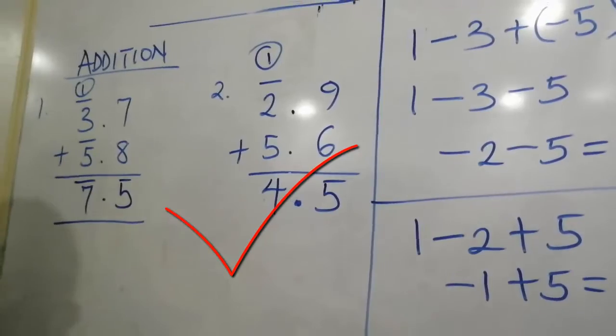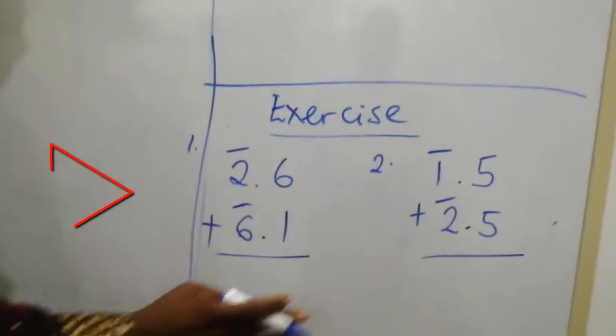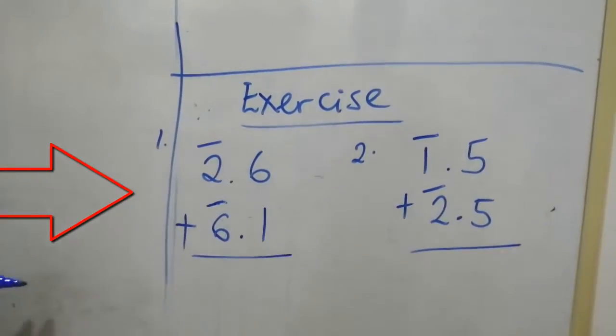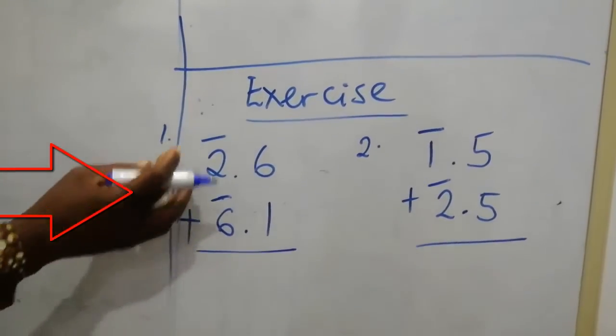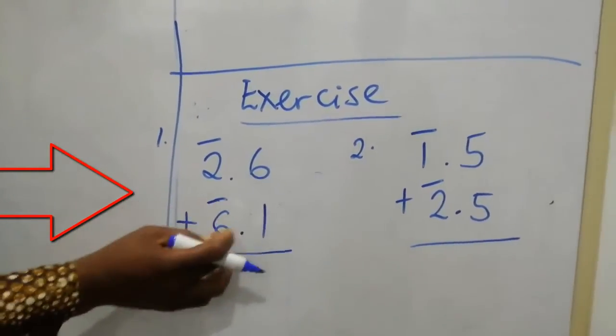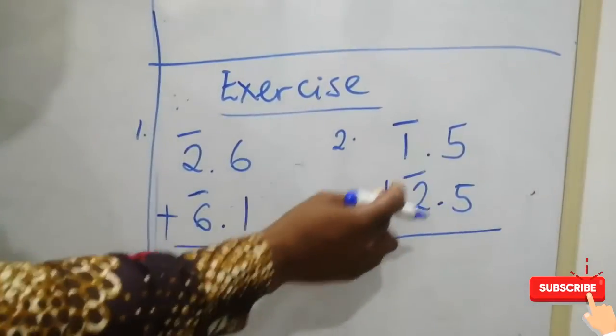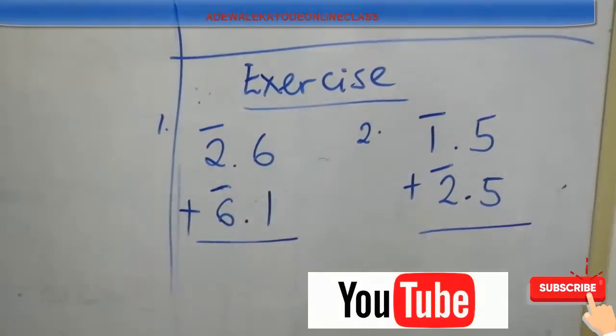Thank you and God bless you. I am going to leave you with this exercise. Send your answer to the comments on YouTube. Question 1 is bar 2.6 plus bar 6.1 and question 2 is bar 1.5 plus bar 2.5. Thank you and God bless you.